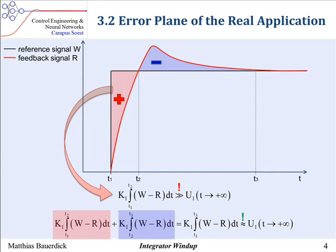In order to remove the integrator windup effectively, the integrating action has to be reduced as long as the actuator is in saturation. And there are a lot of methods to realize this called anti-windup.